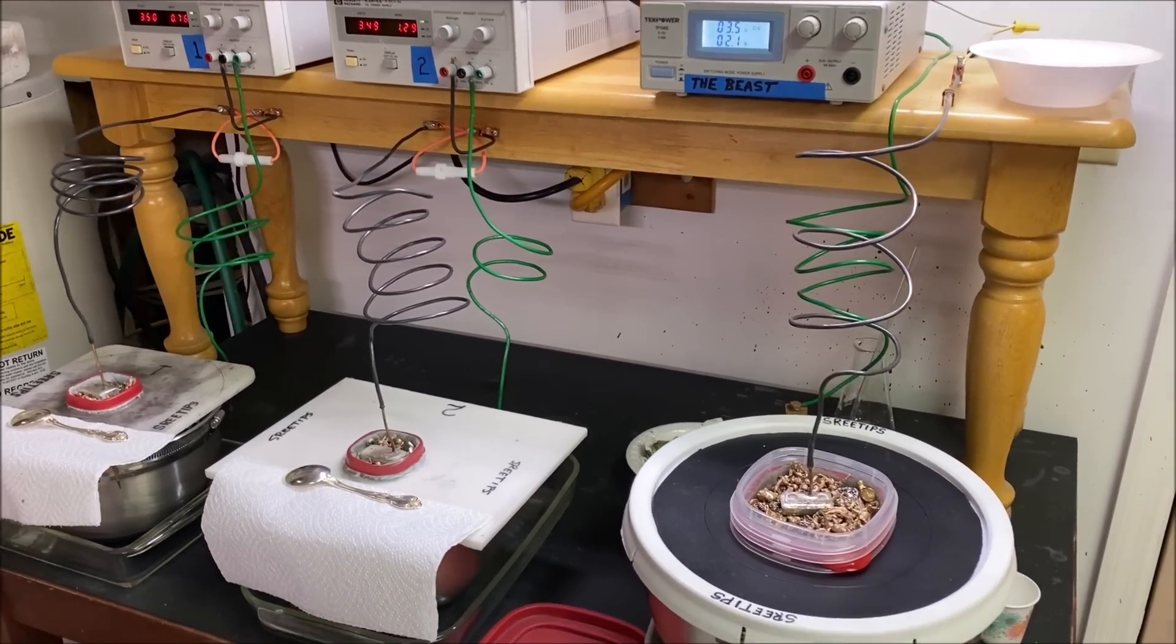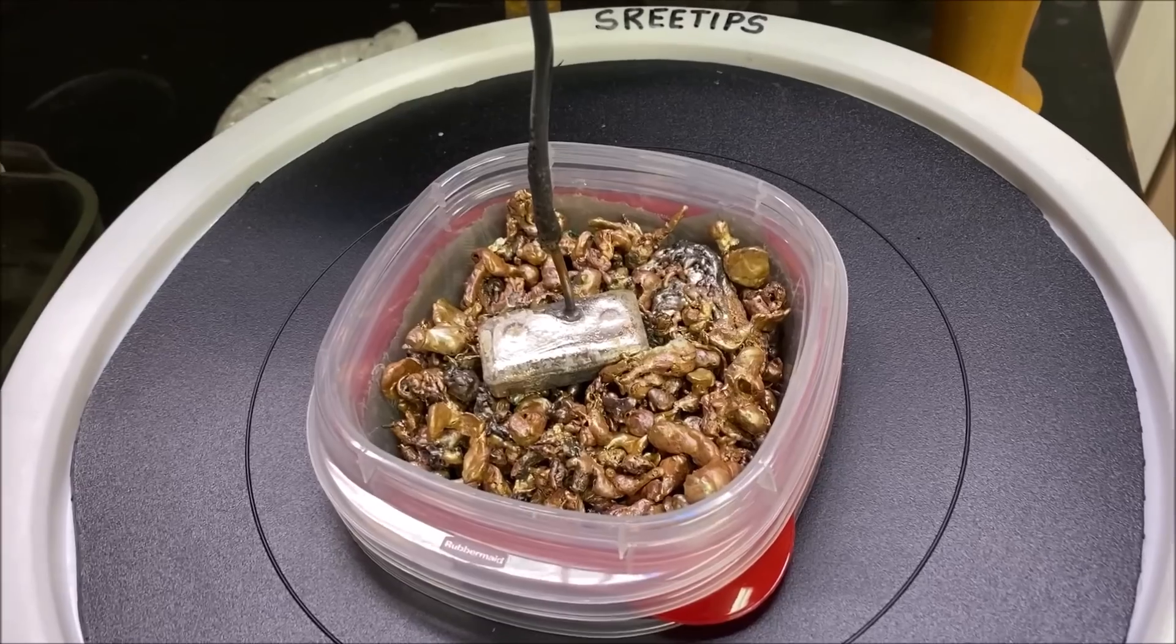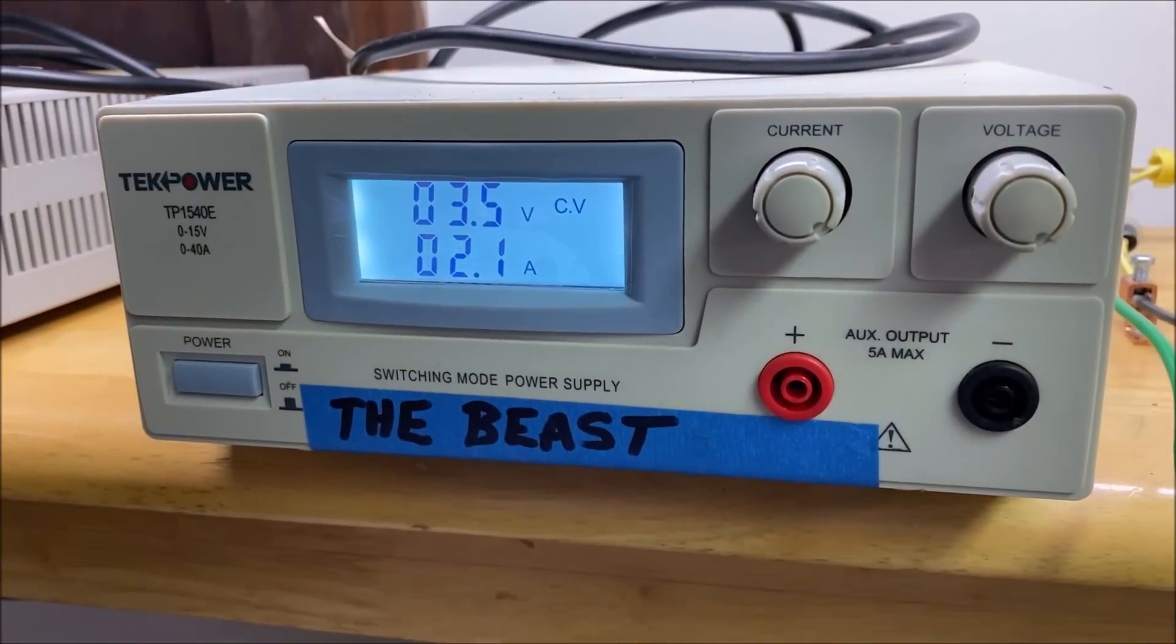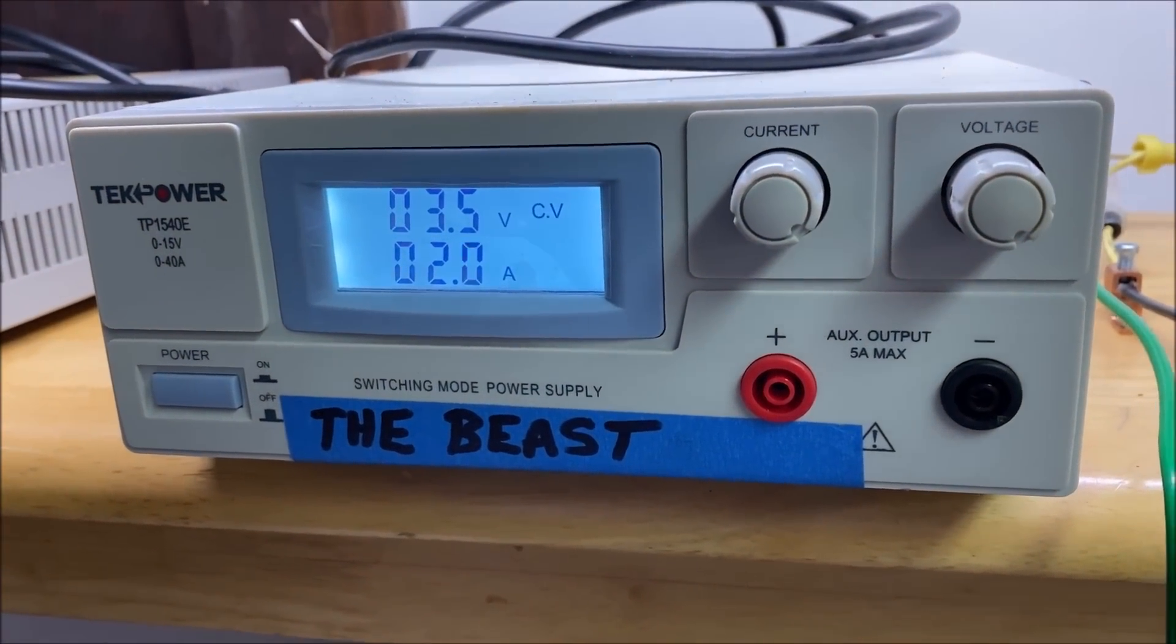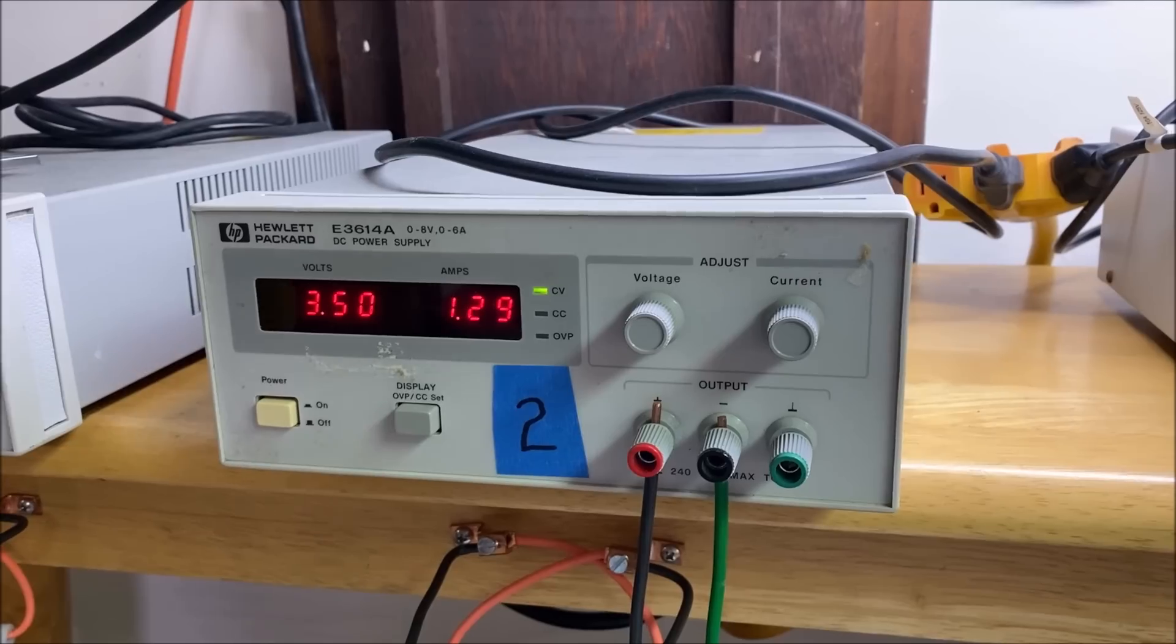Welcome back to day 9 of the Electrolytic Silver Cell Refining Series. There's our current flow on the beast. Cell number 2 is about 1.2 amps.